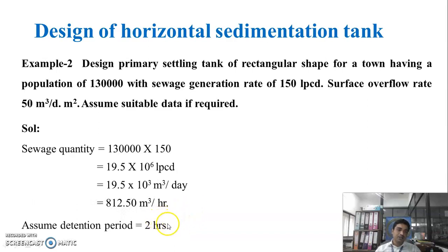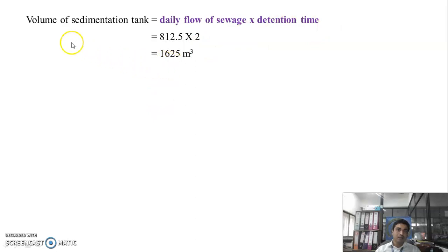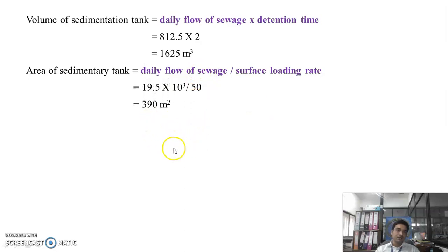We consider a detention period of 2 hours. For horizontal type sedimentation tanks, generally a detention period of 2 to 2.5 hours is used. Volume of sedimentation tank = daily flow × detention time = 812.5 × 2 = 1625 meter cube. Area of sedimentation tank = daily flow / surface loading rate = 390 meter square.